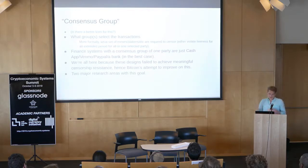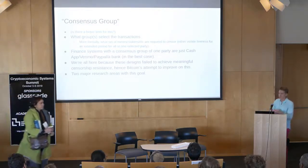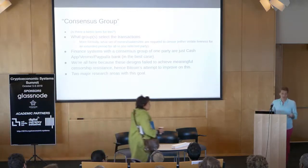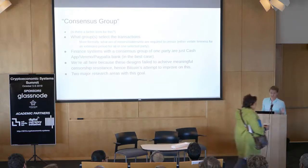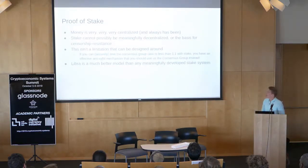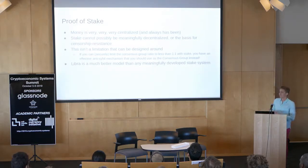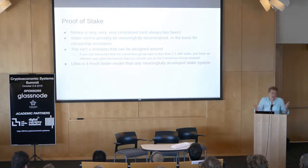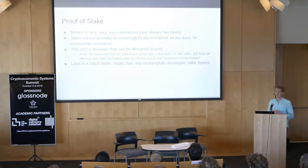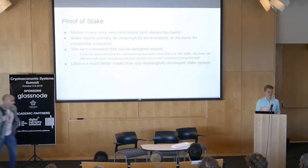So at this point we've diverged into two major research areas for how to achieve this initial goal. The more modern and more hip one is proof of stake. Proof of stake has a similar goal: take this consensus group — this group of stakers, people who hold tokens — and make them our consensus group. Hopefully that's decentralized enough to build censorship-resistant money.